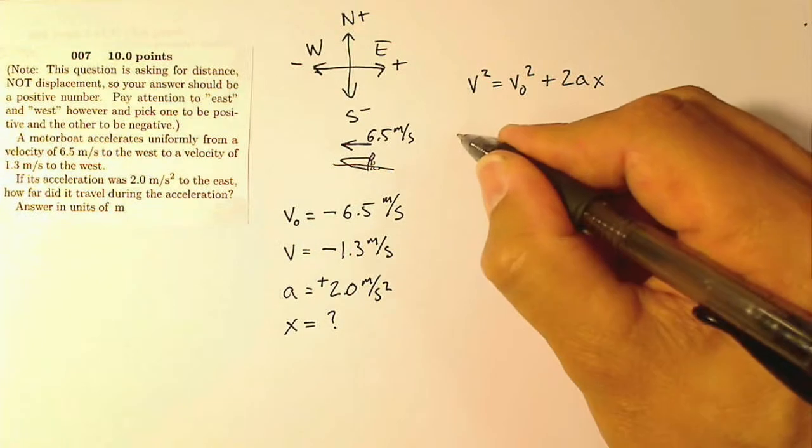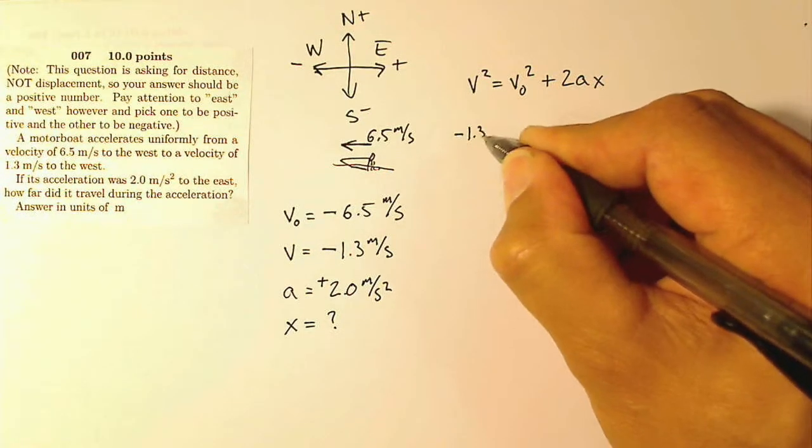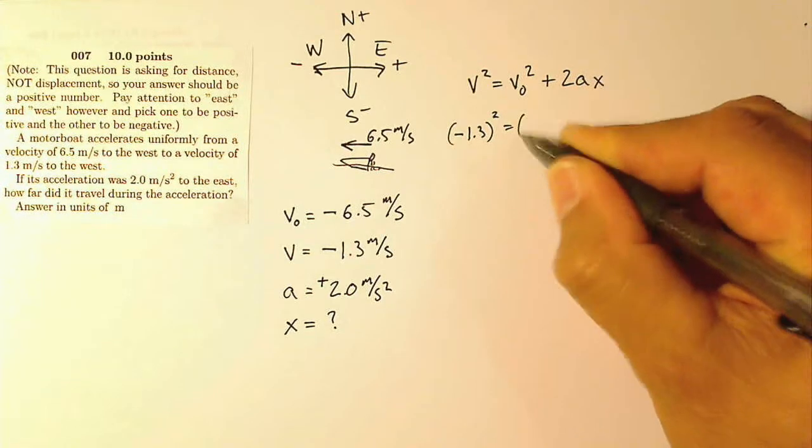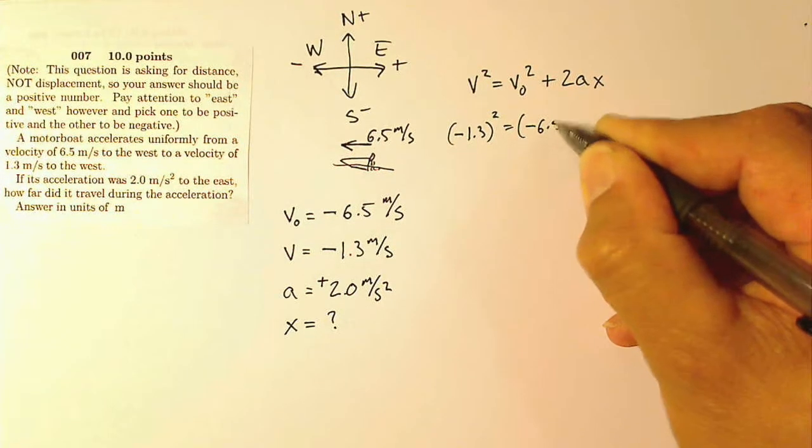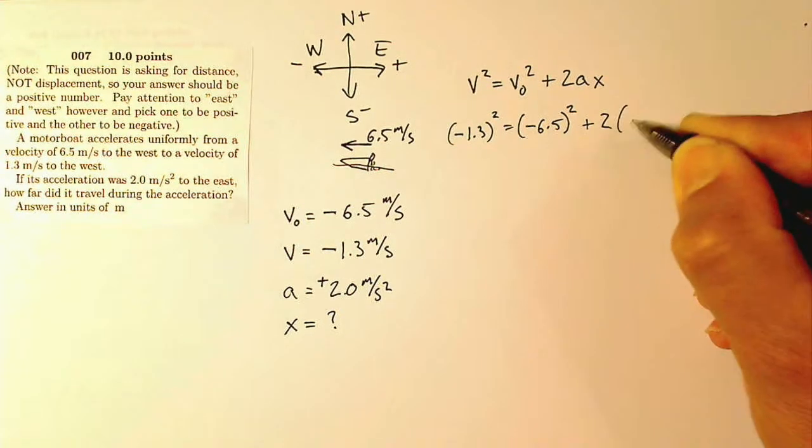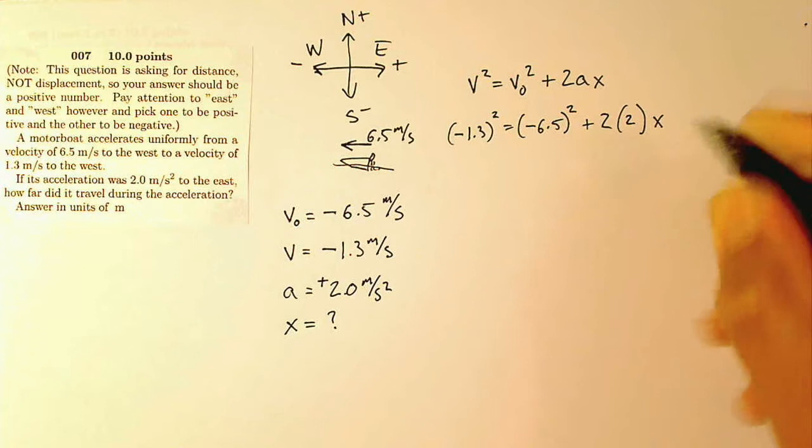So my final velocity is going to be negative 1.3 squared equals my initial velocity, which is negative 6.5 squared plus twice my acceleration times my displacement.